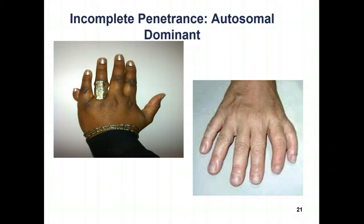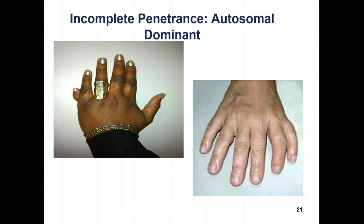Incomplete penetrance is another example of something that doesn't follow Mendel's rules. In incomplete penetrance, a dominant allele may not be expressed in a heterozygous individual. An example of this is polydactyly. Polydactyly means having extra fingers and is an autosomal dominant trait. A single copy of the polydactyly allele is usually sufficient to cause this condition. However, in some cases an individual can carry the dominant allele but not exhibit the trait. The term indicates that a dominant allele does not always penetrate into the phenotype of the individual.